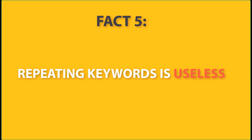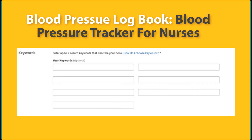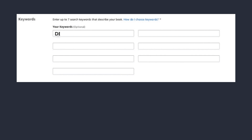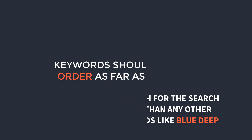The next fact: repeating keywords in your title, subtitle, and keyword boxes hoping to boost rankings is totally irrelevant. If your long-tail keyword is already in the subtitle, you can leave it out of the seven keyword boxes. Related to this, Amazon prioritizes keywords entered in a specific order. For instance, if you insert 'deep blue whale,' your book will rank higher for that exact phrase than for rearranged versions like 'blue deep whale.' Make sure keywords are written in proper order.